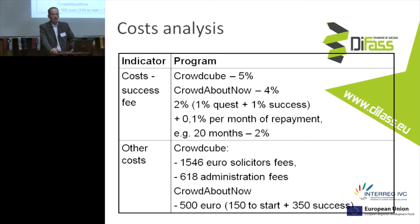Now what about the cost? When talking about the success fee, we have 5% of the total amount in the case of Crowdcube, and 4% for Crowdabout Now, so it is a little cheaper. Using the example from the synopsis, we have 2% — 1% for Quest and 1% for Success — plus 1.10% per month of repayment. For example, with 20 months of repayment that is 2%, so altogether we have 4% for Crowdabout Now.